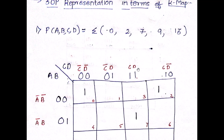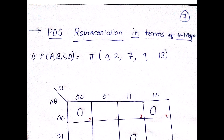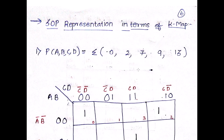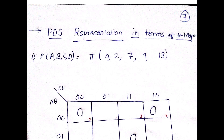The next forms are the SOP and POS representations in terms of K-map. I have already put up a video on SOP and POS — please watch it if you haven't. SOP stands for Sum of Products, represented by the summation symbol. POS stands for Product of Sum, represented by pi.